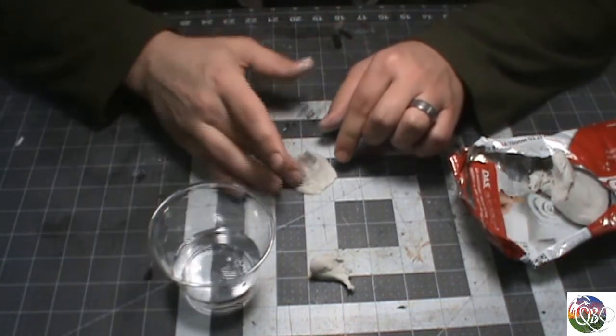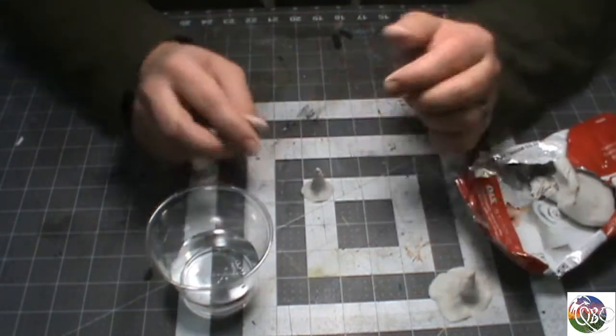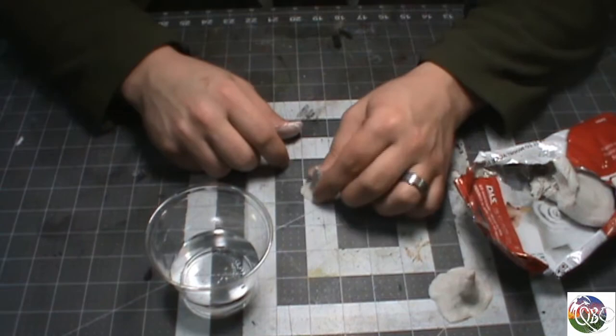If you want to smooth it out, just get a little bit of water on your fingers and then rub it down. Just make up as many and whatever size of those as you want.